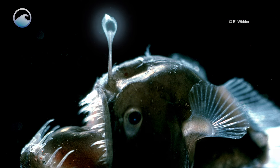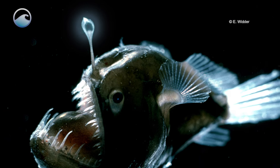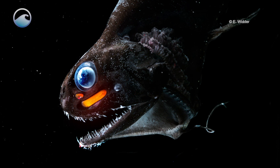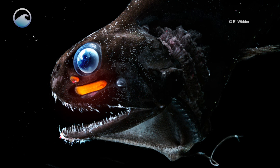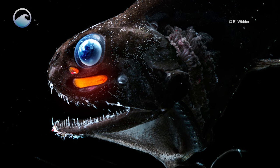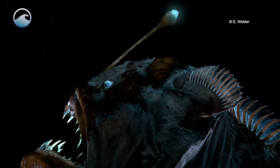They can use the luminescence to attract food to them, and they do it in a bunch of really interesting ways. Or they can use it to be able to see their food. A lot of them have built-in flashlights under their eyes that they can see with. So it gets used for finding food,